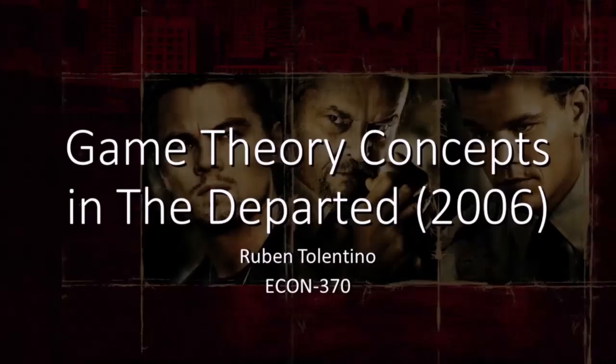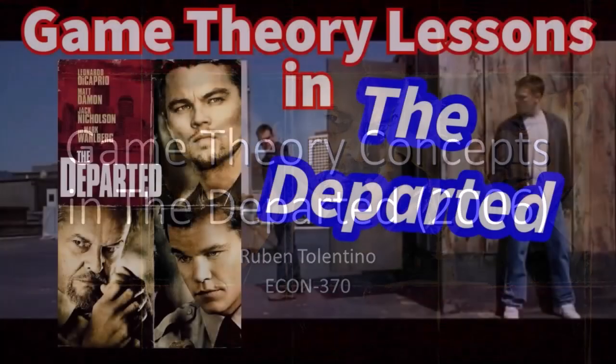To conclude, you can find game theory concepts everywhere — from gaming to movies and politics. Everyone has a strategy and some are better than others. Like we saw at the start, Costigan and Sullivan were not able to cooperate due to the nature of the prisoner's dilemma and the one-shot game. However, in the case of Costello and Sullivan, we found that they were able to sustain their cooperation up until the rules of the game changed. I hope this helped you understand some beginner game theory concepts through the lens of simplified scenarios.